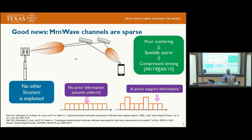Prior work assumes that any angle of arrival could be active with the same probability, which is reasonable if you have no prior information. But it may happen that you have some prior information about the channel, meaning your prior belief about the support could indicate that some directions are active with higher probability compared to others. In this work, we obtain this prior information from the sub-6 GHz channel.